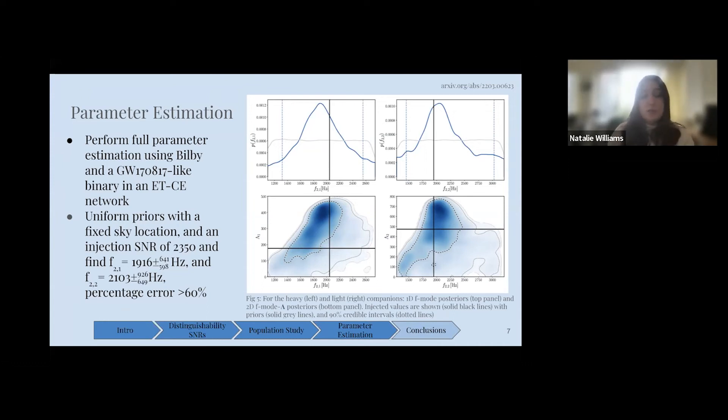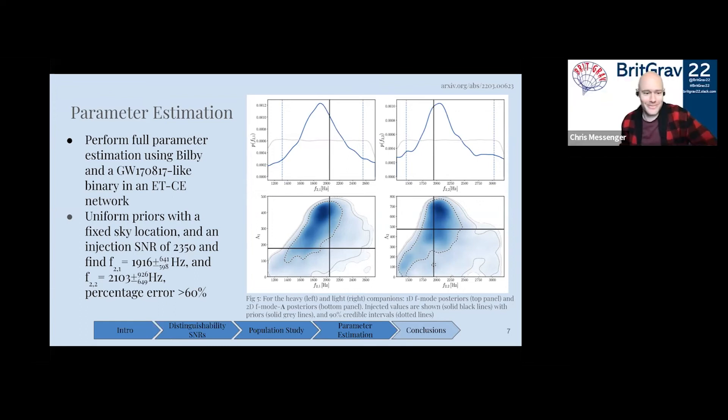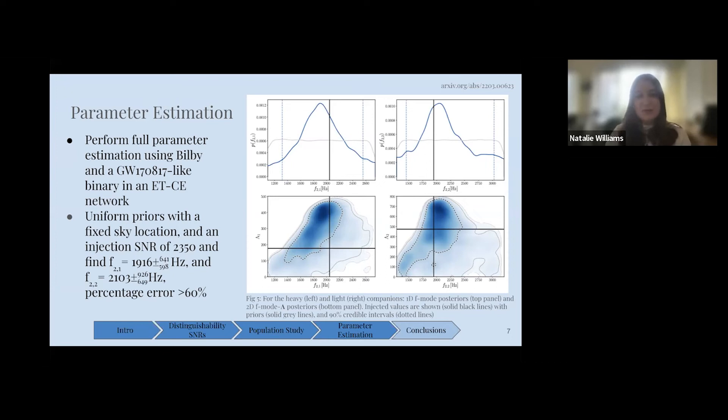Using uniform priors, we get our F-mode frequency posteriors for our individual neutron stars. Here we're looking at hertz rather than angular frequencies. You can see that these are actually quite wide posteriors. We do measure the F-mode frequencies to a few hundred hertz. However, we do get wider posteriors than we expect, and this is because we see quite large correlations with our dimensionless deformability. You can see the correlations shown here in our posteriors.